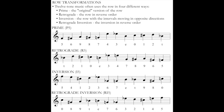Another row form that's commonly used is what we call the retrograde of the row. The retrograde takes the row and simply reverses the order of the pitches. My retrograde, written here as R5, starts on Bb, then moves to D, then to C-sharp, and then to C. This mirrors the end of my prime form — my prime form ends on Bb, then goes to D, then to C-sharp, then to C. The retrograde is simply the backwards form of the prime.